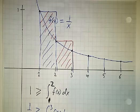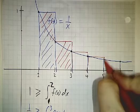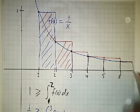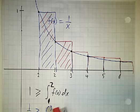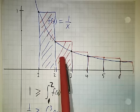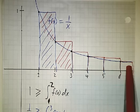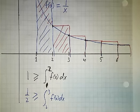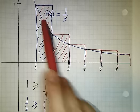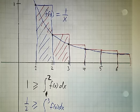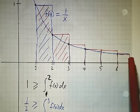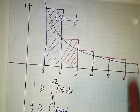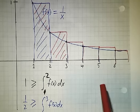Likewise, we can look at this rectangle and this rectangle and so on. What we discover is that the sum gives the areas under all of the rectangles, while the integral gives the area underneath the curve. But there's more area underneath the rectangles than underneath the curve. Since the total area under the curve is infinite, the total area under the rectangles also has to be infinite.